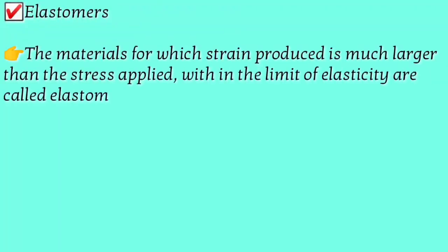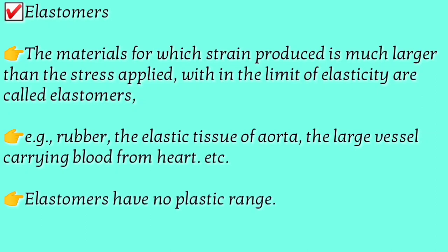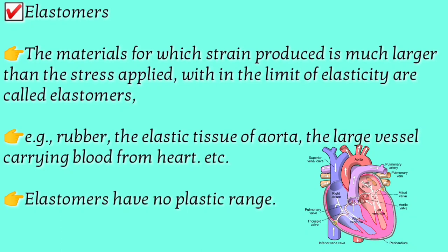Next is the elastomer. Materials like rubber bands, when you apply a small stress, produce very large strain — these are called elastomers. Aorta (heart tissue) is also an example of an elastomer. An important characteristic of elastomers is that there is no plastic range or plastic region — meaning there is no plastic flow, unlike ductile materials where plastic flow occurs.